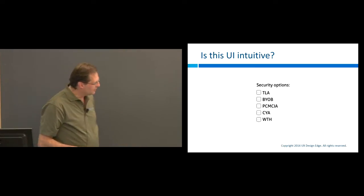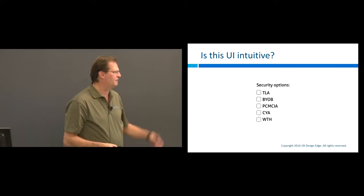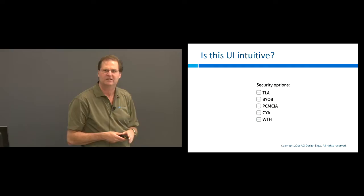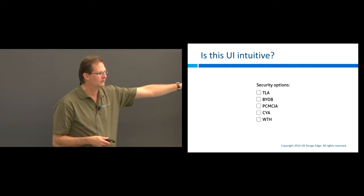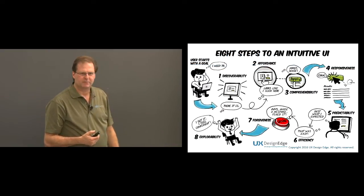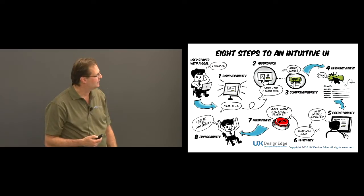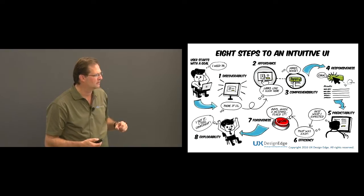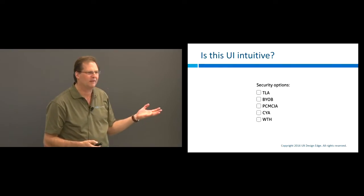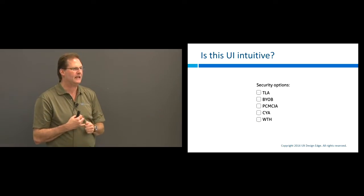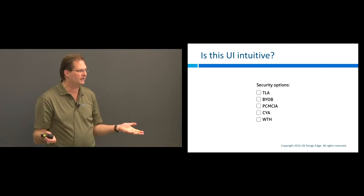Here are some security options — not real ones, but this is what security options look like to people who don't know anything about security. Is this intuitive? No. We've got discoverability and affordance — we know how to click on the options. But comprehensibility? Do we know what these labels mean? We have no idea. How do we make an informed decision when we're asked a question and we don't understand any of the answers?